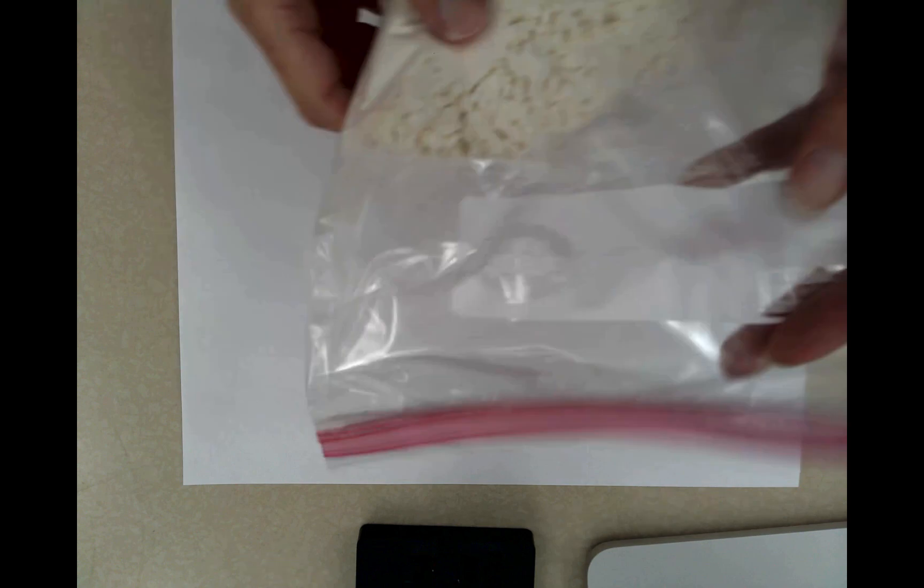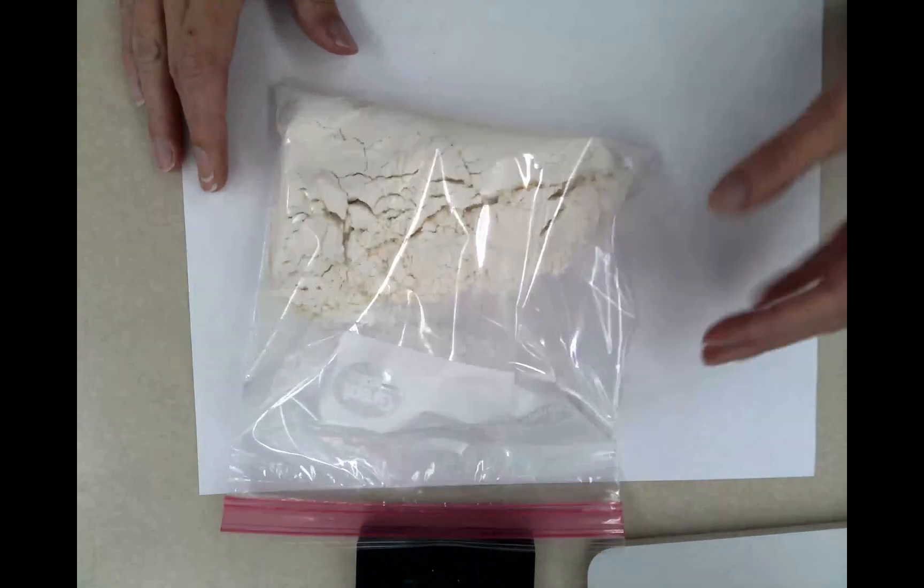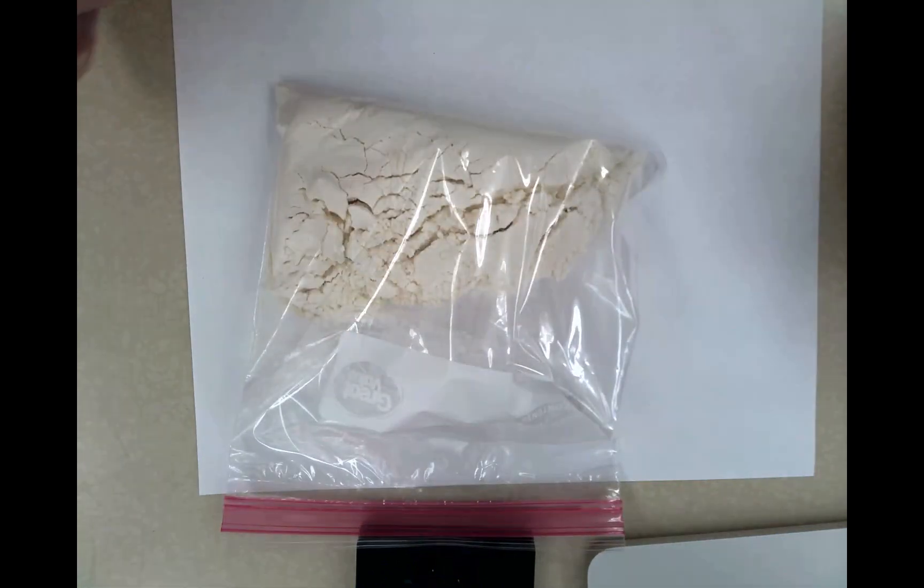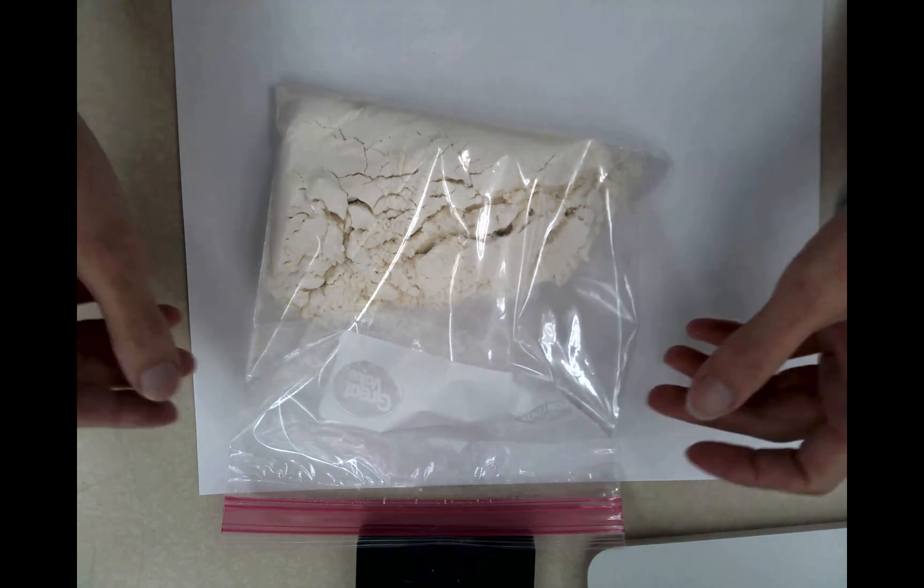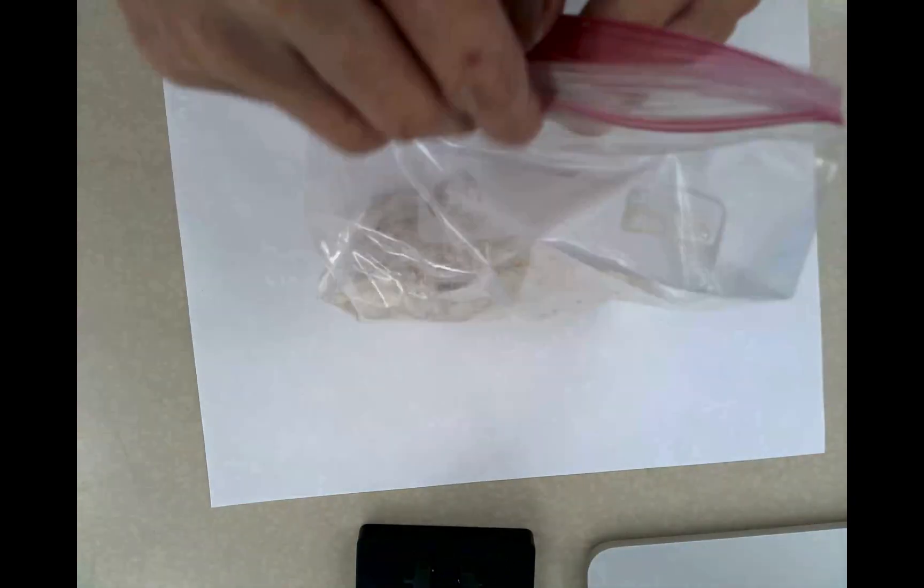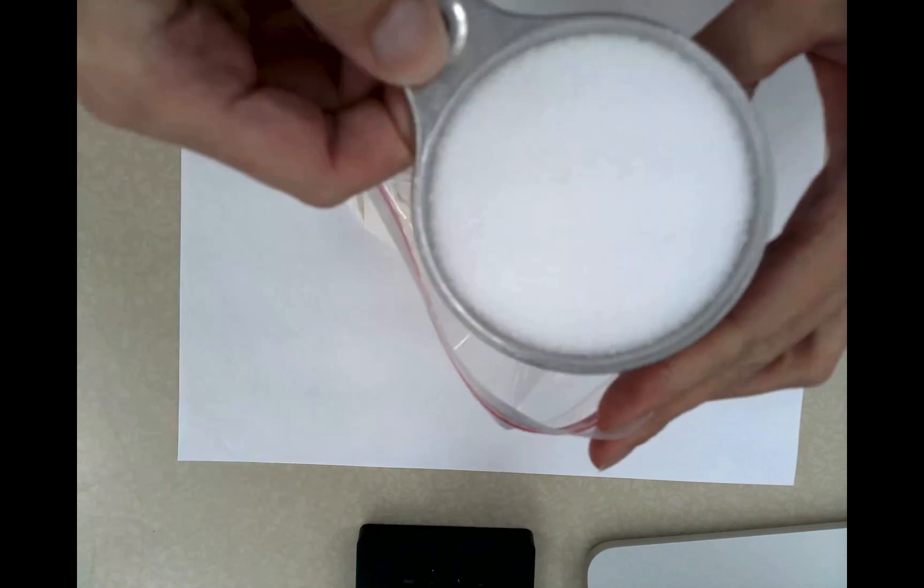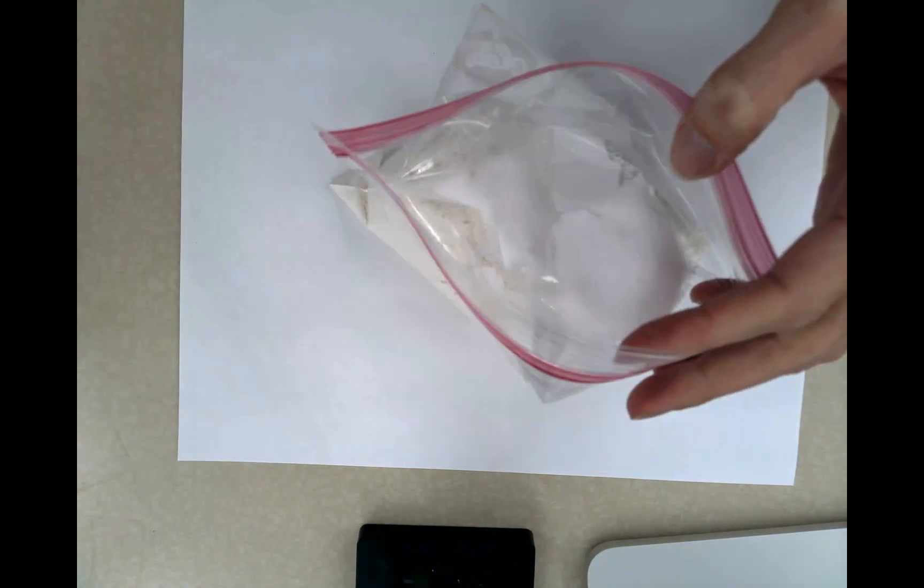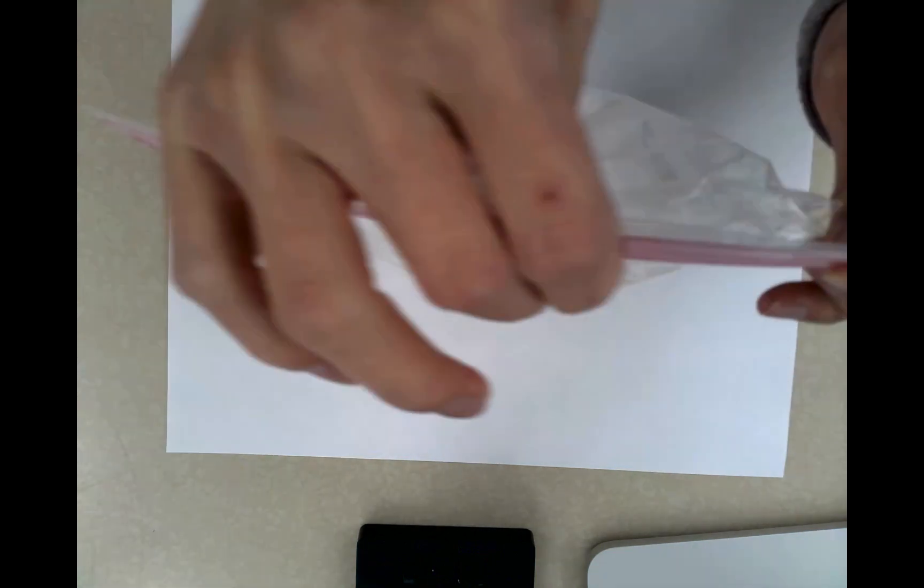All right so in your kit you have a bag of flour, a bag of salt, and a knife and some papers. What we're going to do first is make our play-doh. So you're going to open the bag and put your salt into the flour. Seal it up and then just mix it up.